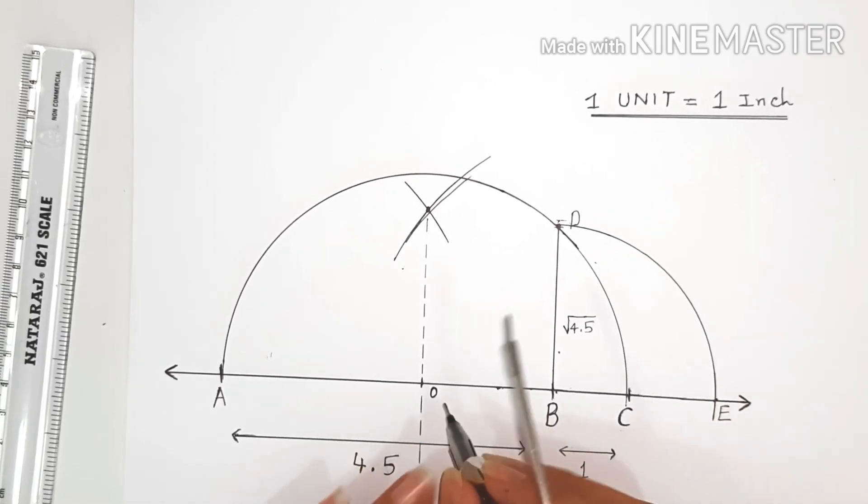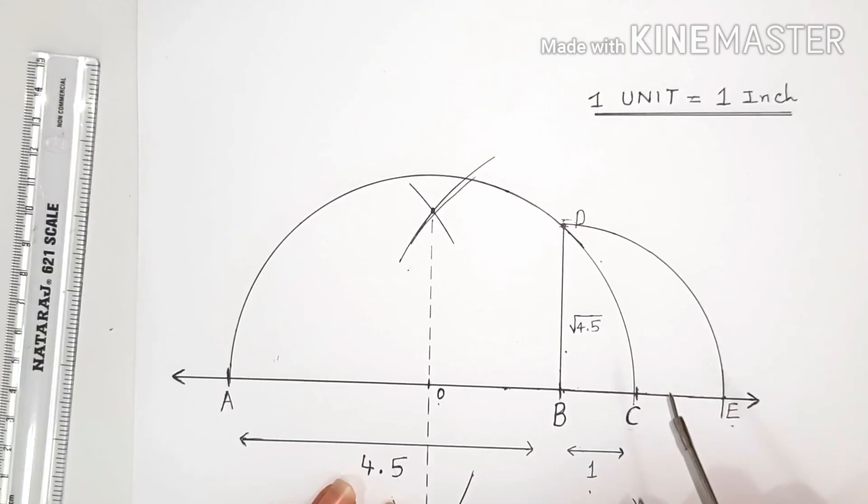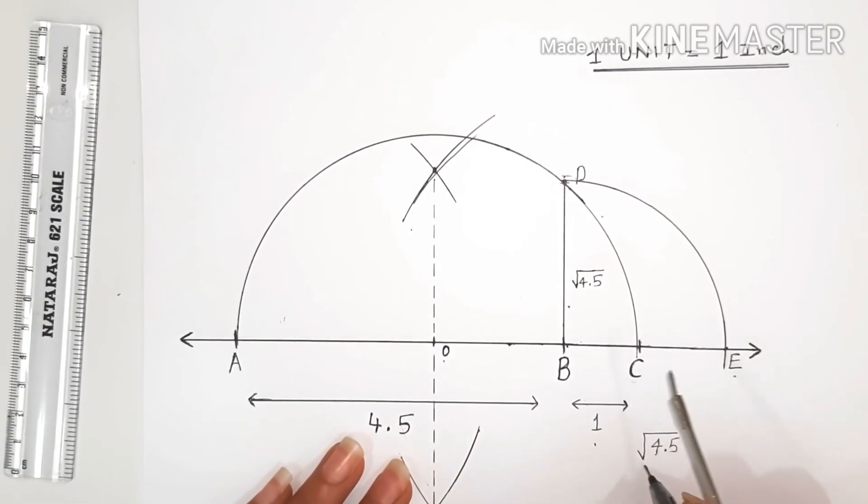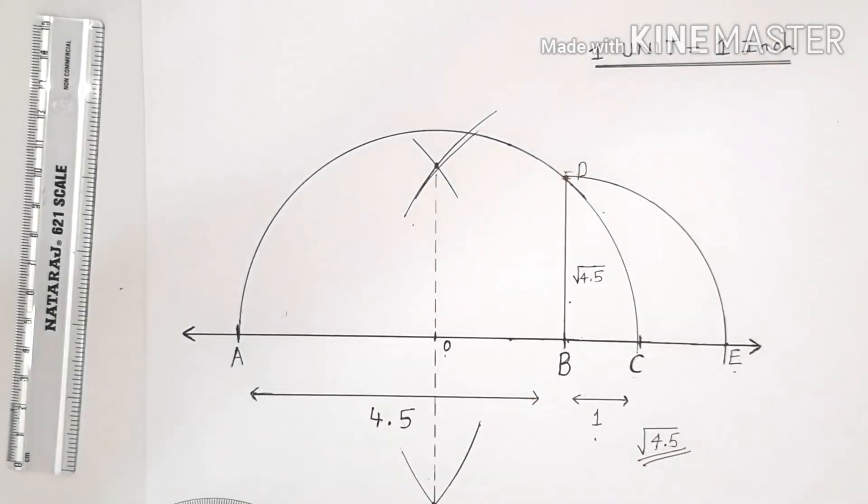Our zero will be B over here in this case, and the distance between B to E would be square root 4.5. That's it for the video guys. I hope you liked and enjoyed the video. Bye bye!